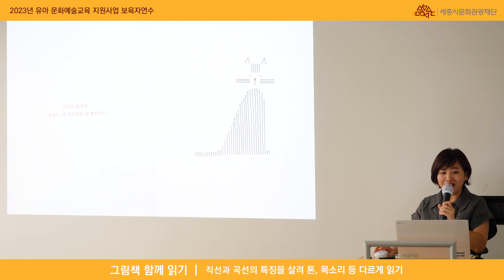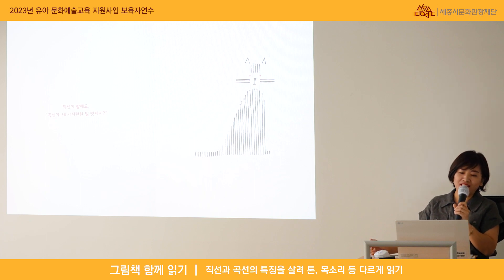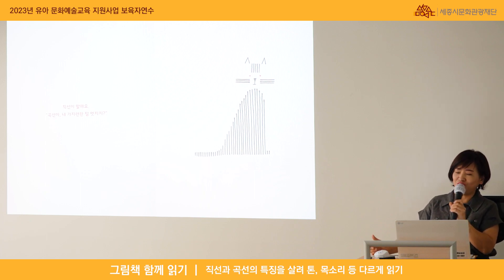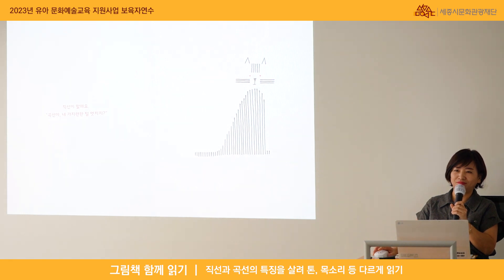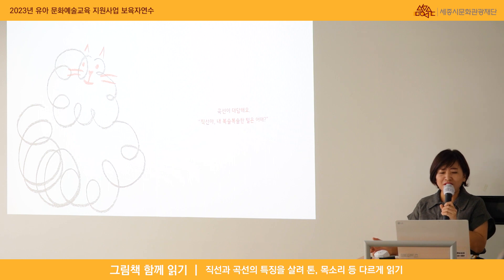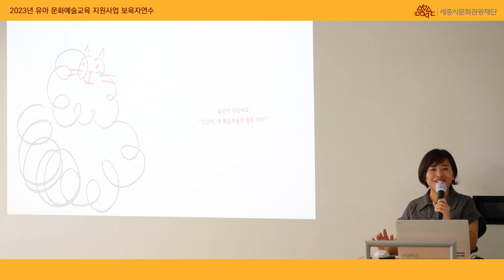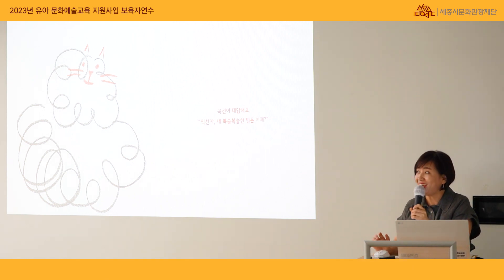직선이 말해요. '곡선아, 내 가지런한 털 멋지지?' 곡선이 대답해요. '직선아, 내 폭슬폭슬한 털은 어때?'